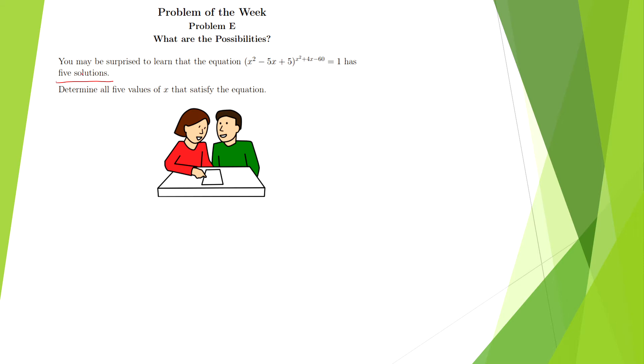But in this case it tells us this, so we have a goal that we can set to. We have to determine all 5 values of x that satisfy the equation.